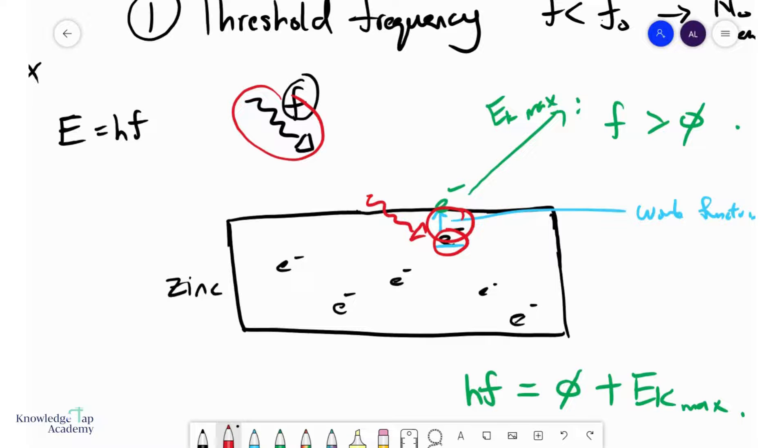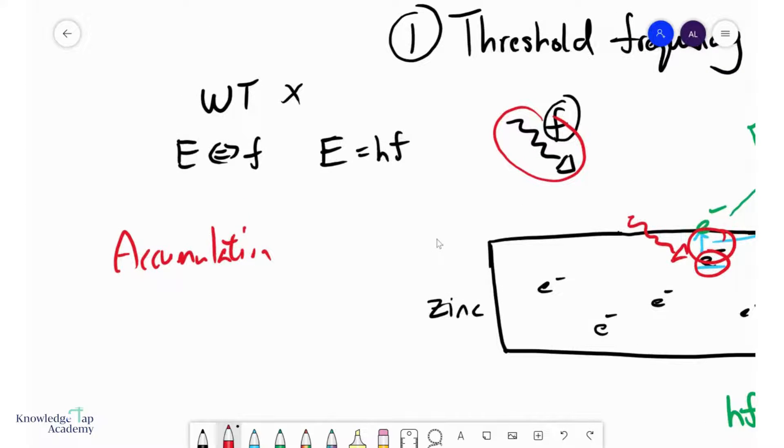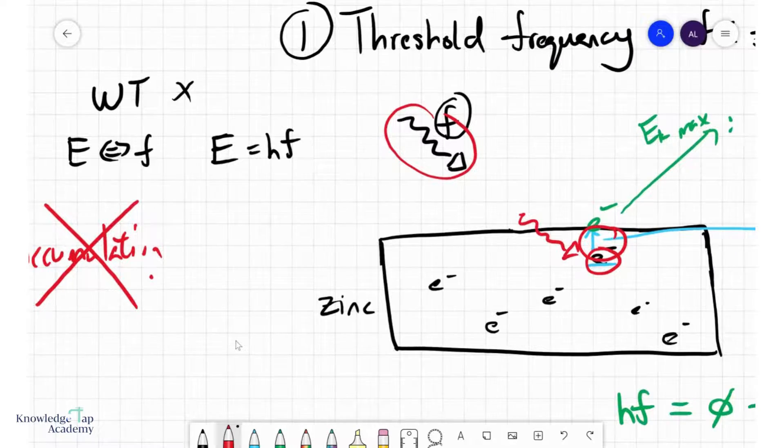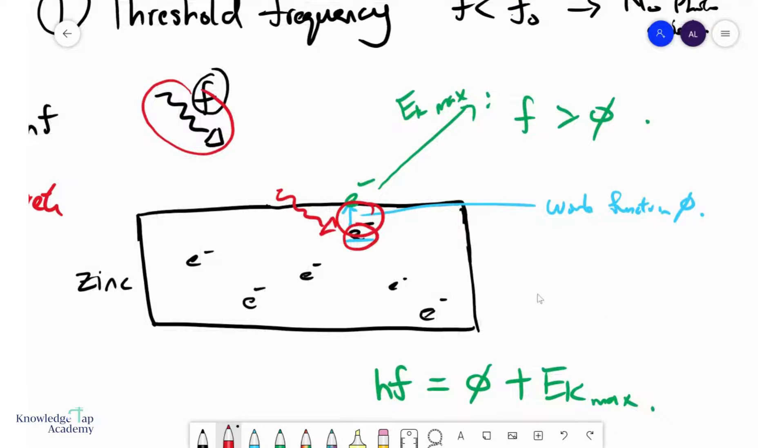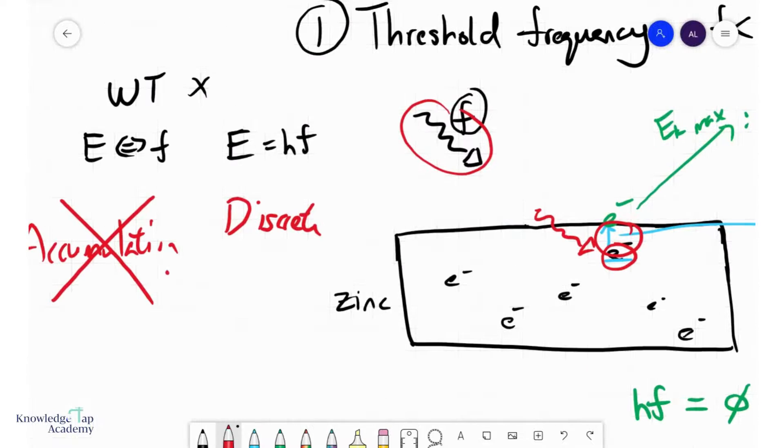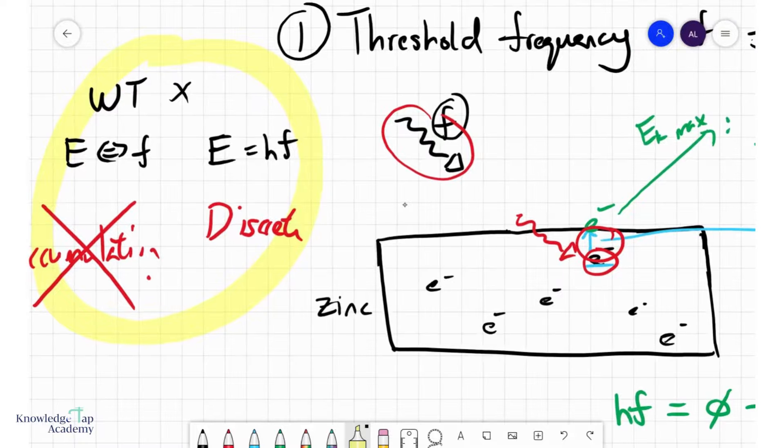And that is why you would never see any photo emission. And so again, it shows that there is no energy accumulation, but in fact gives foundation or gives evidence that energy is transferred discretely photon by photon, allowing electrons to reject these photons one by one. And so these are the two reasons that wave theory is wrong: it shows that energy accumulation doesn't occur, and energy has indeed a relation to frequency.